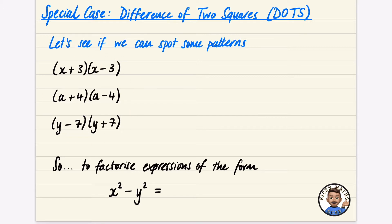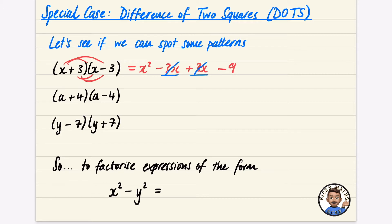We look at things like a letter plus a number, and then a letter minus the same number. When we expand these brackets we get x times x which is x squared, x times minus 3 which is minus 3x, 3 times x which is plus 3x, and then minus 9. The negative 3x and plus 3x cancel out, leaving x squared minus 9.